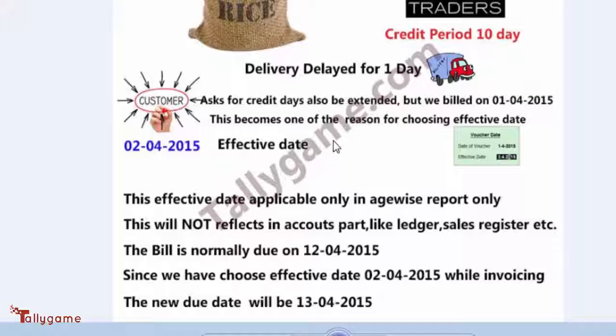This effective date is applicable only in the Agewise report. It will not reflect in account books like Ledger, Sales Register, etc. In the Ledger and Sales Register, the date will remain 1st April 2015. Since we have chosen effective date 2nd April 2015 while invoicing, the new due date will become 13th April 2015.